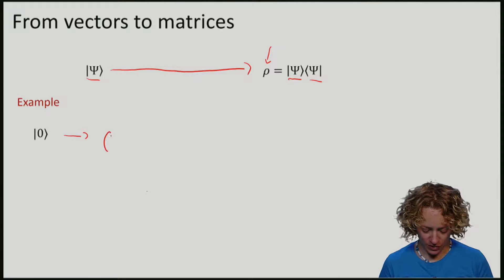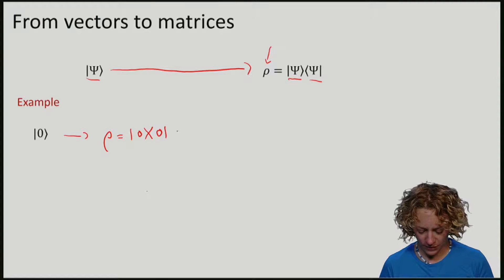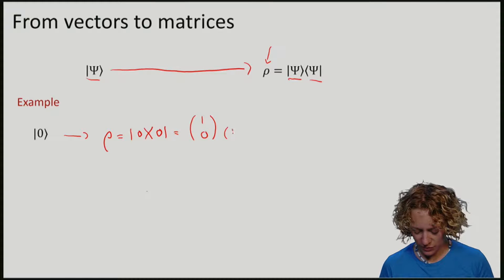So I want to compute the density matrix for |0⟩. So I take |0⟩, which is [1, 0]. This here is the conjugate transpose of the vector. So what I get is a matrix that looks like [1, 0; 0, 0].